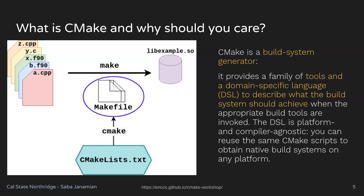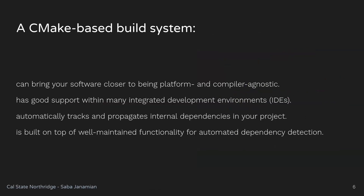The language sometimes seems a little weird when you first learn it, but after a while you get used to it and can write complex systems with it. When you create a CMake-based build system, the first advantage is it can bring your software closer to being platform and compiler agnostic. Instead of writing GCC or Clang commands, you use CMake commands and CMake translates them between compilers. Your CMake will be agnostic to both the compiler and the platform — you can run it on Windows, Linux, and so on.